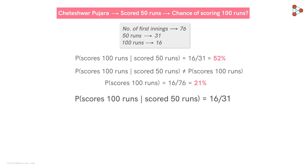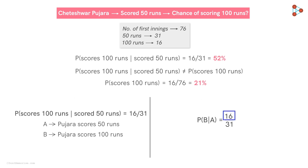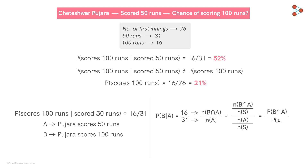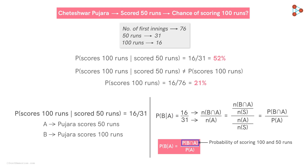Now, let's see if we can represent this mathematically. If we consider A to be the event that Pujara scores 50 runs and B be the event that Pujara scores 100 runs, observe that 16 here is the number of times Pujara scored both 100 and 50 runs. Hence, 16 is nothing but N of B intersection A, and 31 is simply the number of times he scored a 50, so it is N of A. Now, we can adjust N of S in the numerator and the denominator as shown. Hence, we get P of B intersection A upon P of A. So, the probability of B given A is given by this formula. The numerator P of B intersection A is the probability that Pujara scores both 100 and 50 runs — that is, both events happening — and the denominator P of A is the probability that Pujara scores 50 runs.